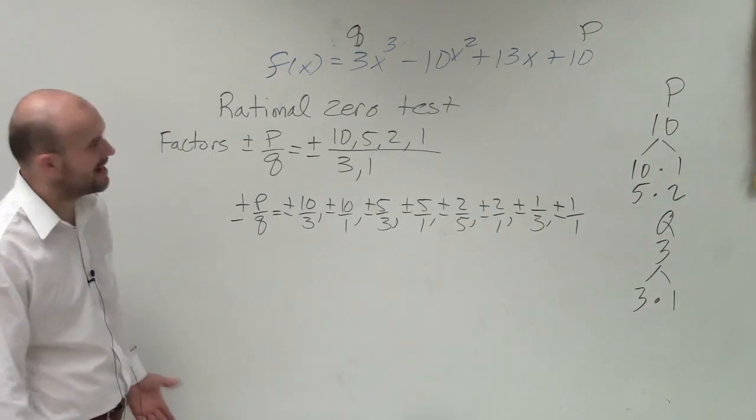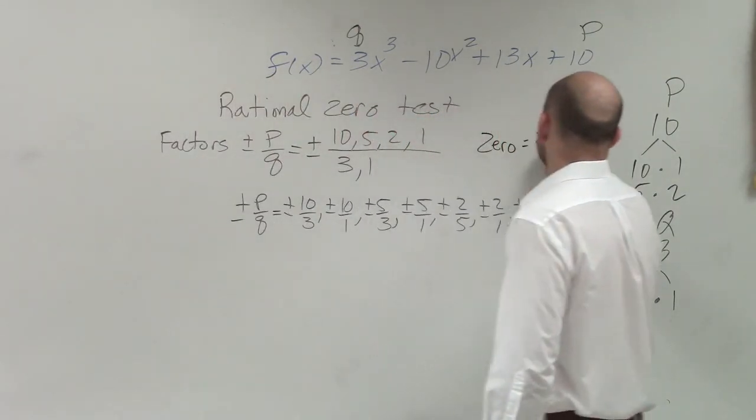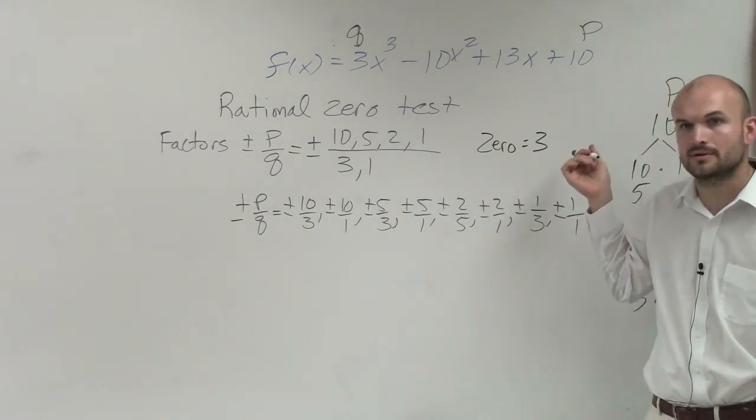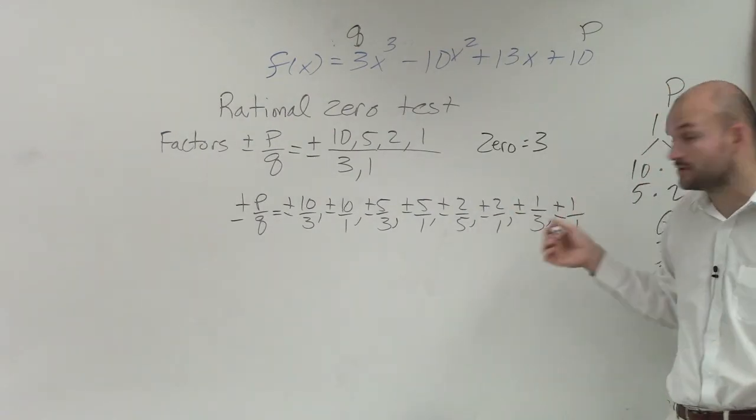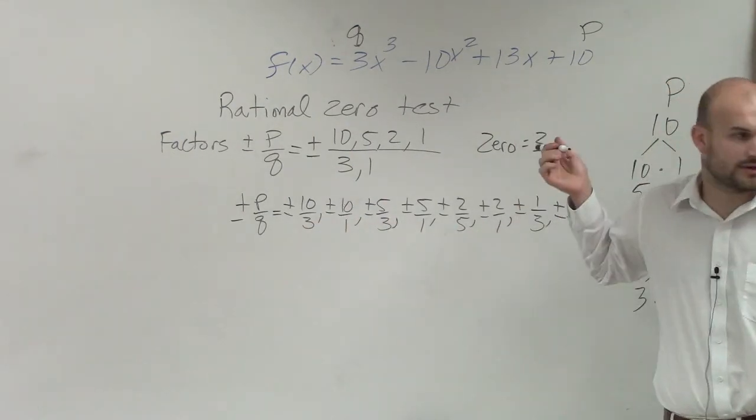So what I asked for, the reason why I asked that is can the number, can zero be three? Can one of the zeros be three? No, because three is a rational number. And you can see that it's not listed in here, right? So therefore, you know that three is not a zero.